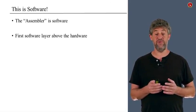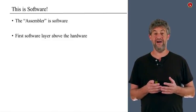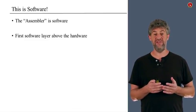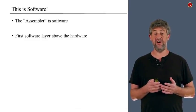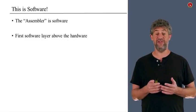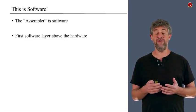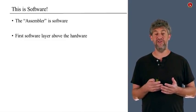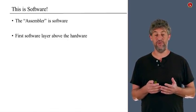Notice that for the first time in this course, this is software. This is a program that takes as input a file written in assembly language and produces another file written in machine language — zeros and ones which can be directly executed on a computer. It's really the first software layer that we have in every computer, and we're doing it together with the hardware to give us a complete picture.